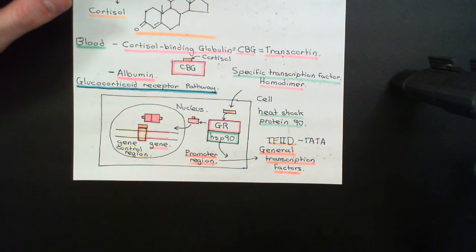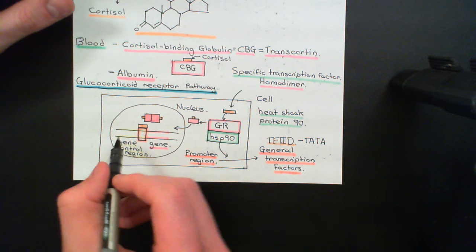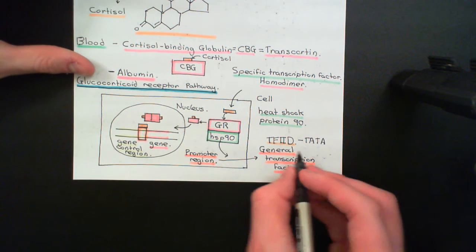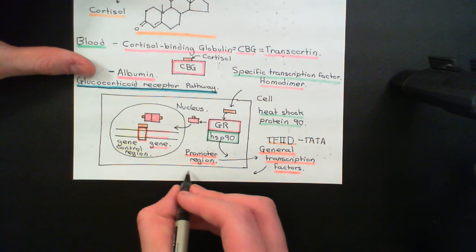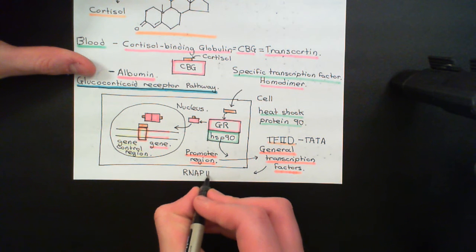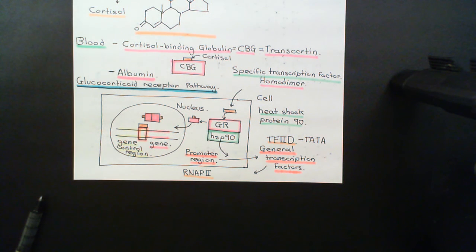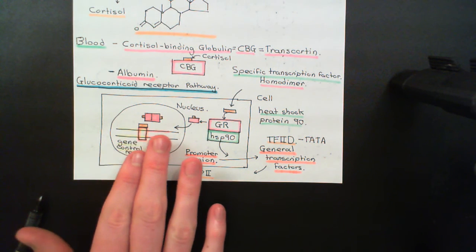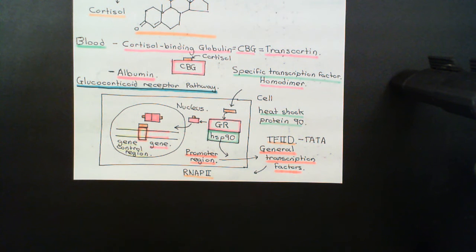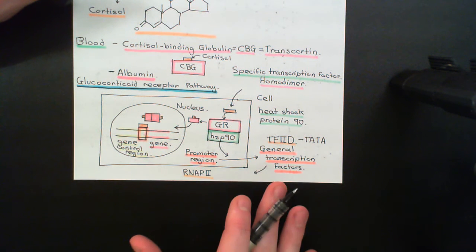These general transcription factors bind on top of the promoter region, and then on top of the general transcription factors, the RNA polymerase II enzyme — RNAP2 — assembles. Once assembled, it works its way along the gene and produces a piece of mRNA — i.e., transcription occurs. That's the bit that occurs upstream of any gene, essentially the same for all genes.